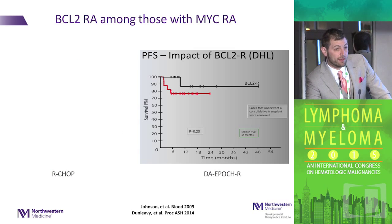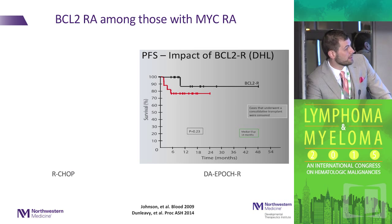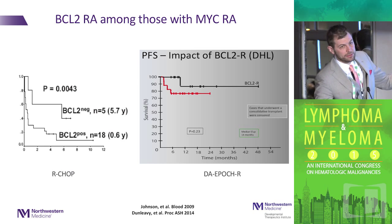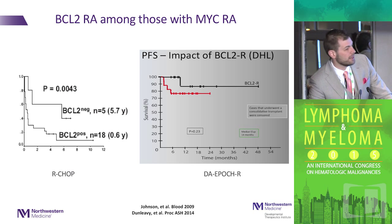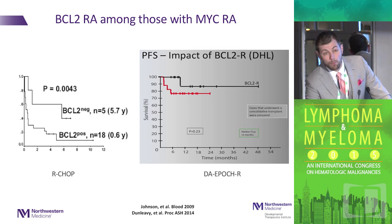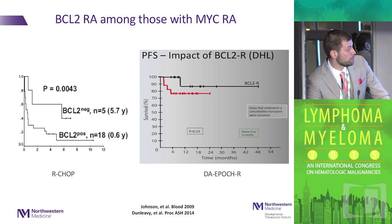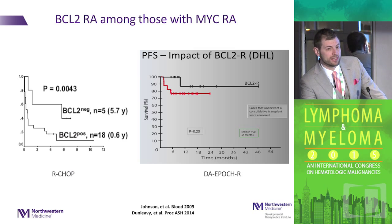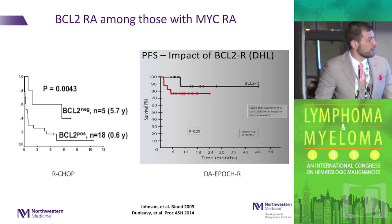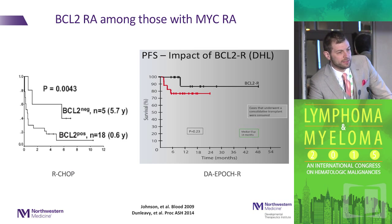From the NCI prospective study looking at dose-adjusted EPOCH, BCL2 rearrangement data suggests that EPOCH may help abrogate the negative impact of a BCL2 rearrangement, compared to older retrospective data suggesting that BCL2 positivity by rearrangement among MYC-positive patients tends to do much more poorly. This is early data suggesting some abrogation of the negative impact of BCL2 in MYC-rearranged patients, but it's important to remember the EPOCH study has very short follow-up so far and is a single-arm study.